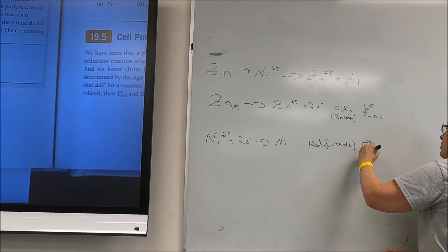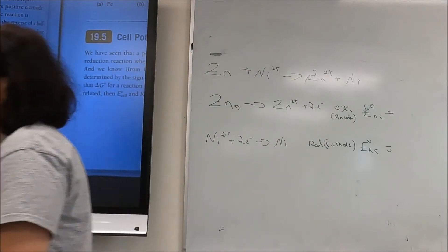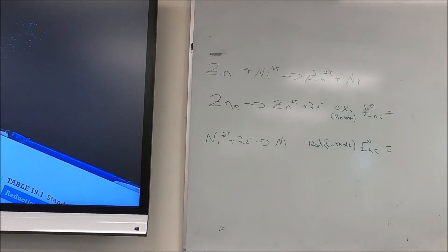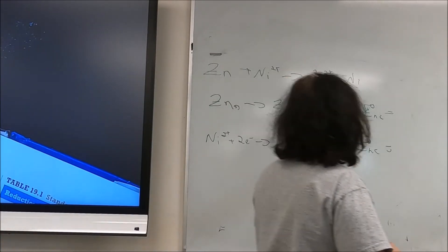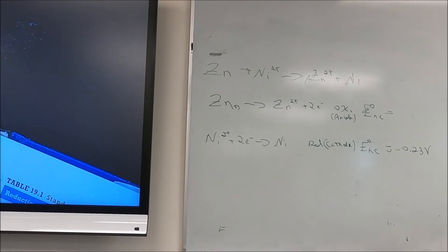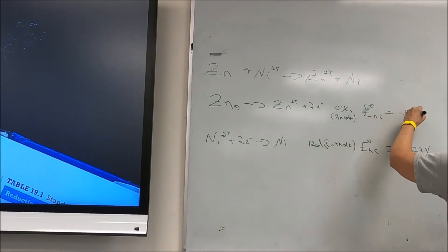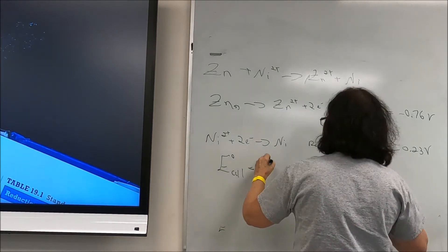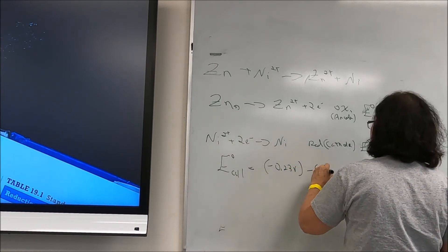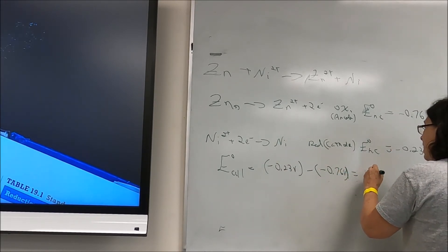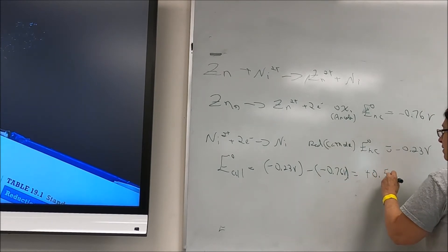Looking up E° half-cell values: Ni²⁺/Ni gives −0.23 V; Zn²⁺/Zn gives −0.76 V. So E°cell = E°cathode − E°anode = (−0.23 V) − (−0.76 V) = +0.53 V. This reaction is spontaneous.